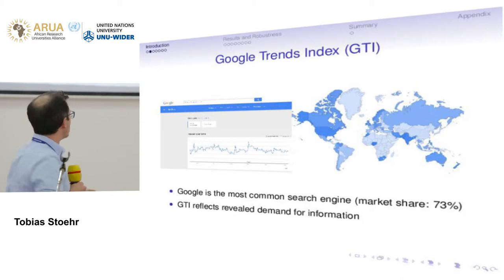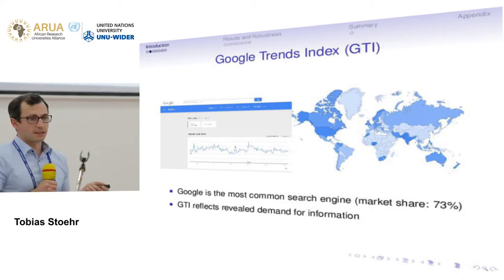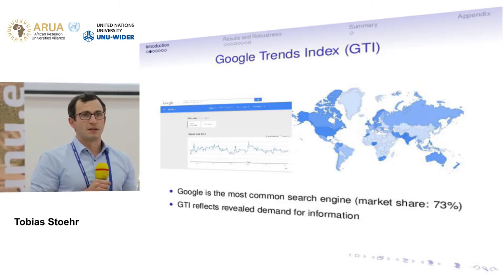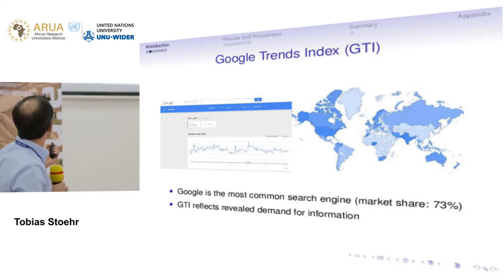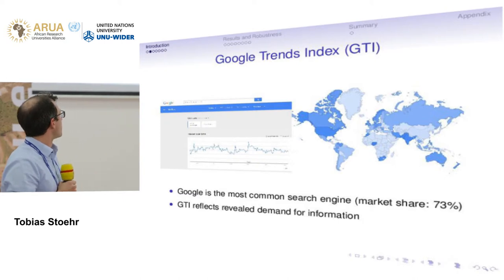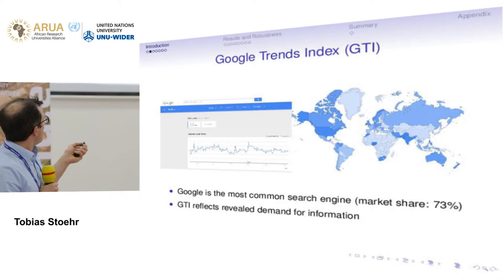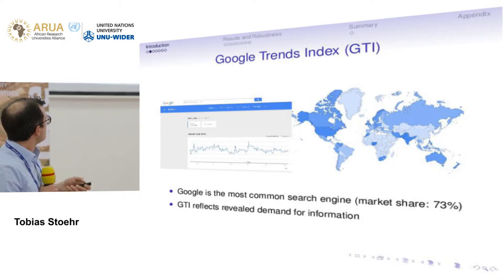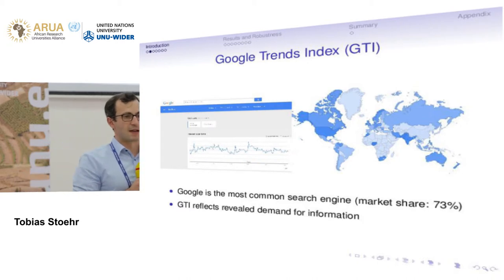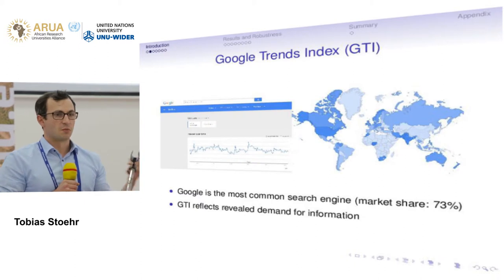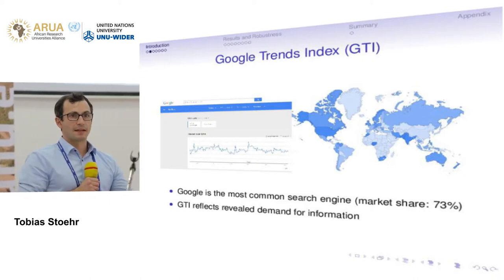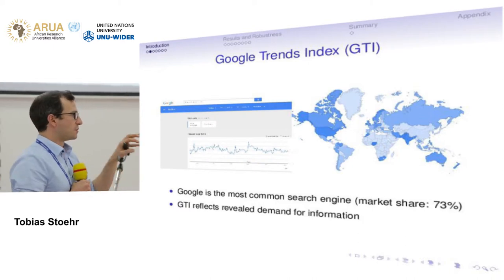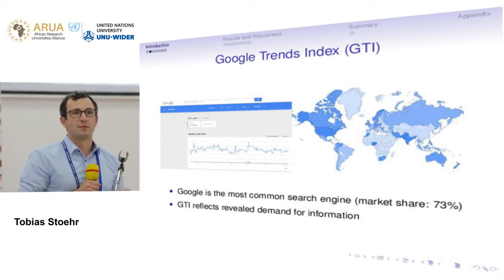In our concrete case, we use Google Trends. If you don't know it yet, it's basically a tool to summarize Google search volumes across the world. You enter a word — for example, 'visa,' which is somewhat problematic because it can be confounded with the financial service — and you get a map of search volumes in a particular year. Darker colors mean more searches for that term. You can also download the time series behind that data down to weekly level.